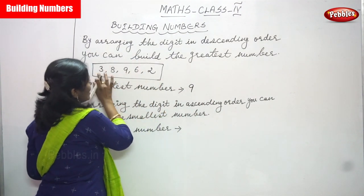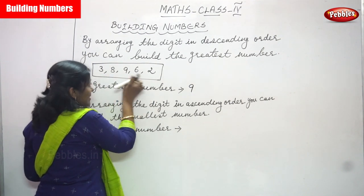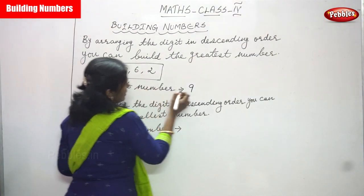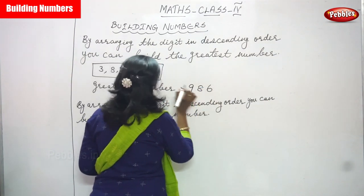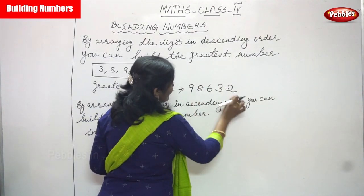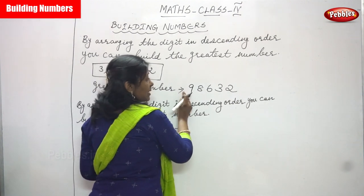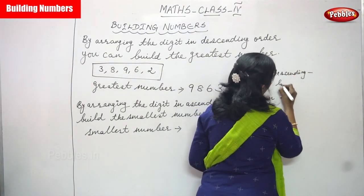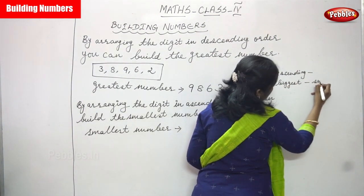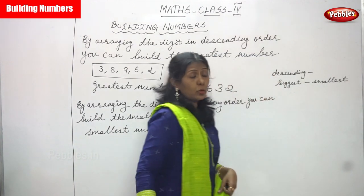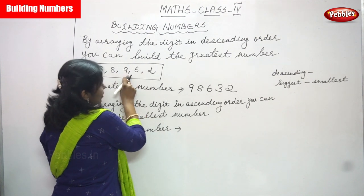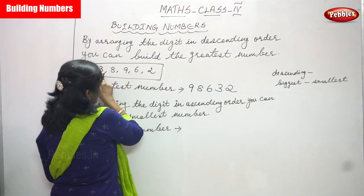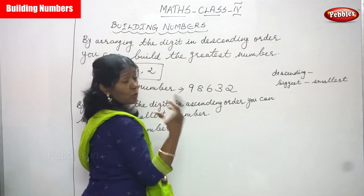Five numbers are given in this box. In these numbers, which number is greatest? Nine is the greatest number. Next greatest number is eight. Next greatest number is six. Next one is three, and next is two. This is the descending order — bigger to smaller. So the first biggest number is nine, second is eight, third biggest number is six, fourth is three, and the very smallest number is two.